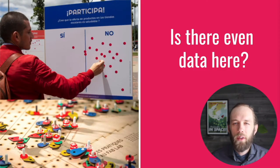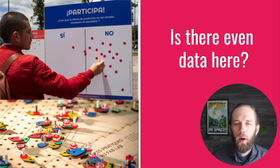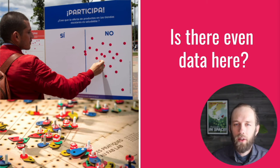Finally, input visualizations might cause us to ask: when do we consider data to be data? While some examples of input visualizations produce structured and easily interpretable data tables, many manifest data only in the visual artifact itself, in ways that can make that data hard to quantify or reproduce. For example, how should we interpret a mark in a physical voting system that intersects both yes and no? What information, if any, does an elaborate stack of tokens communicate if the semantics of ordering aren't specified in the instructions?